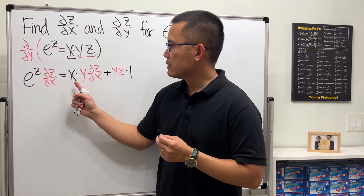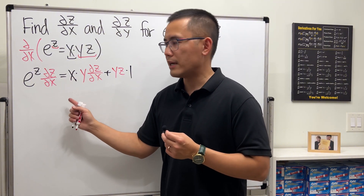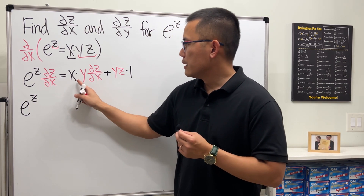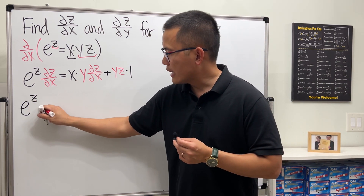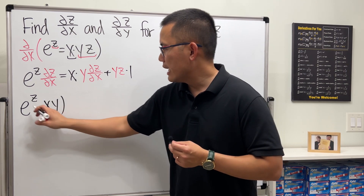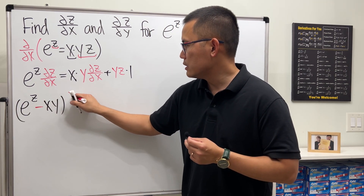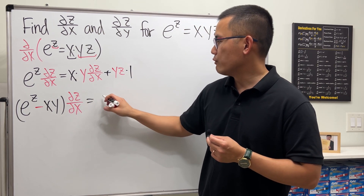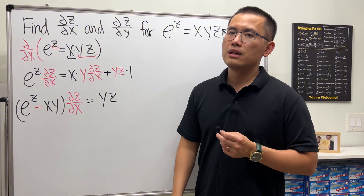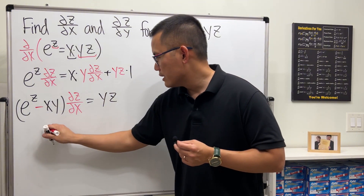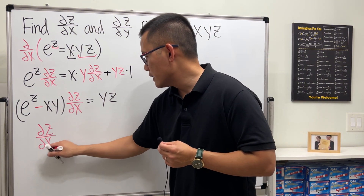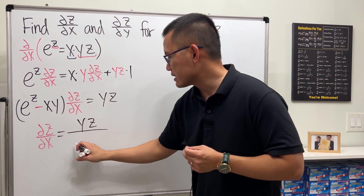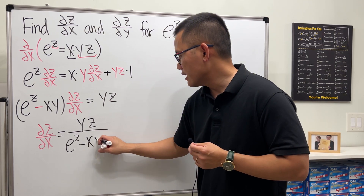I will factor out the partial z with respect to x. So it will be e to the z minus xy times partial z with respect to x, equals negative yz. Then divide that to both sides: partial z with respect to x is just negative yz over e to the z minus xy.